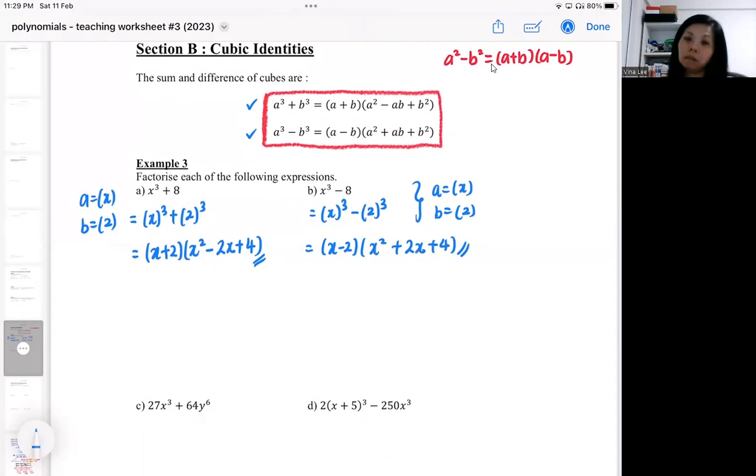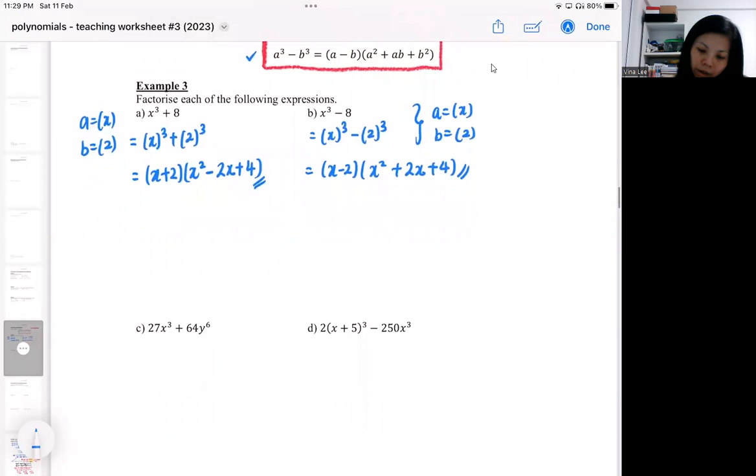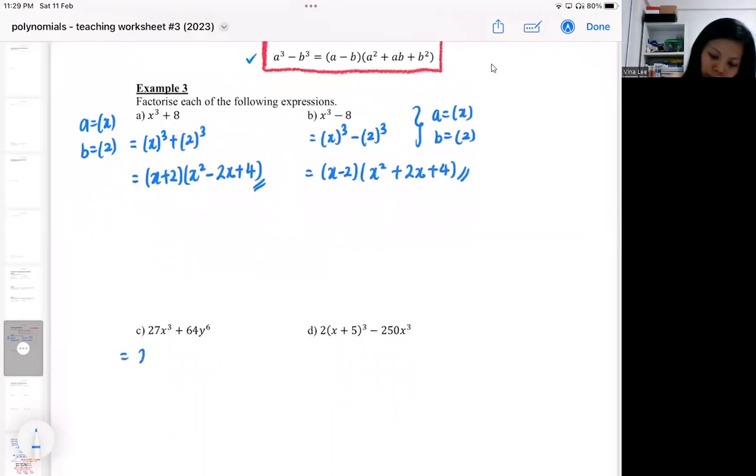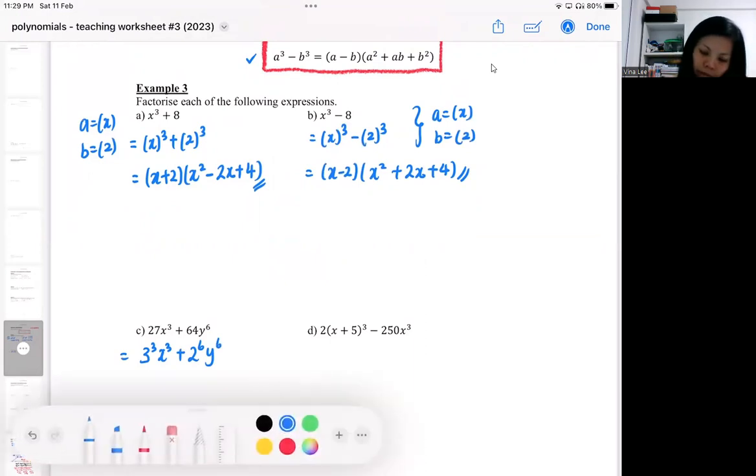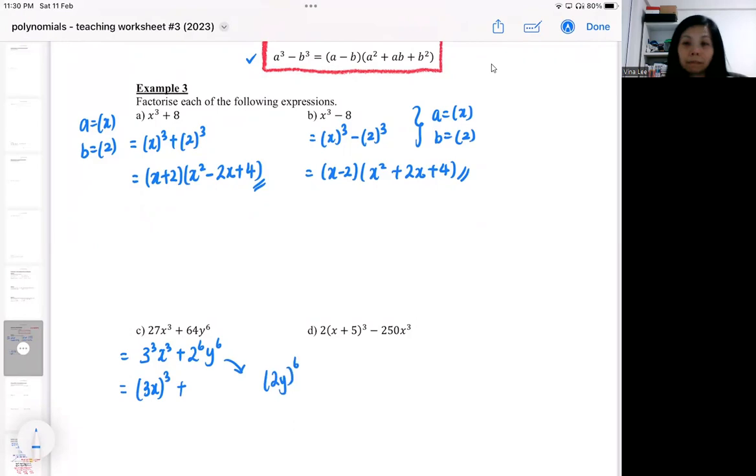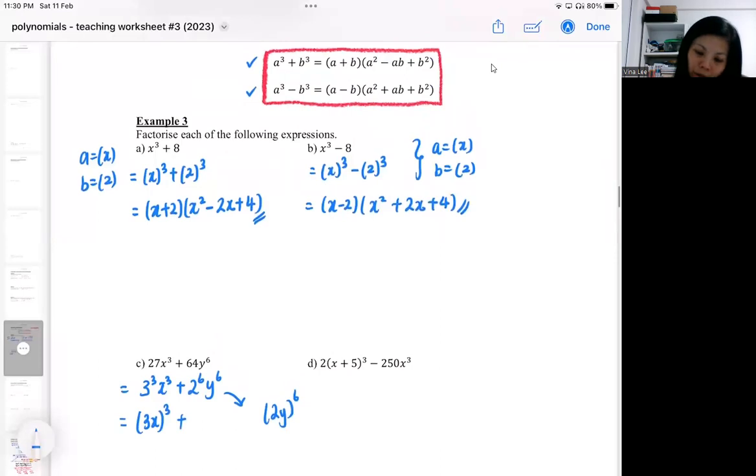This will be the one where it's a bit more complex. So 27 is 3 cubed. Observe 64 first. That would be 3f cube. For this one, obviously it looks like you're going to be writing this, but I'm not going to be writing this because if you look at the formula, I need it to be a cube.